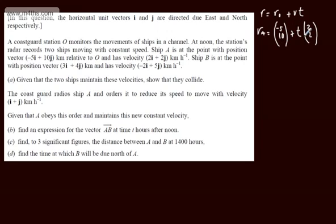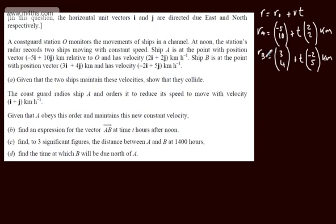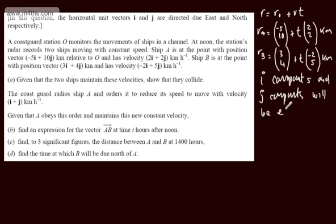We can write ship A's position in i and j notation. Now considering the position vector of B, T hours after noon, we start at (3, 4) plus T times (-2, 5) kilometres. Those are two expressions for the positions of the two ships T hours after midday. If these ships collide, the i components will be equal and the j components will be equal.